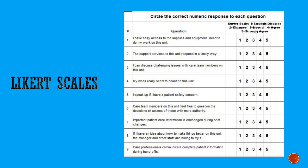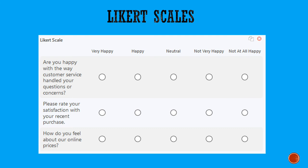Here are examples of Likert scales. It doesn't always have to be a agree-to-disagree line, but you're giving the person a gradation of responses — in this case, from 'very happy' to 'not at all happy.'